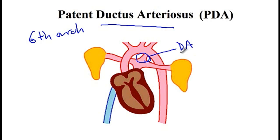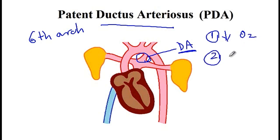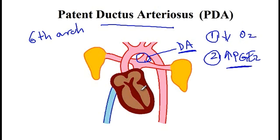The factors that help keep the ductus arteriosus patent include the low arterial oxygen content during fetal circulation and relatively high prostaglandin E2, part of which is produced by the placenta. After birth, when the placenta is removed, the level of prostaglandin E drops, and there is also more oxygen in the arteries, resulting in closure of the ductus arteriosus.